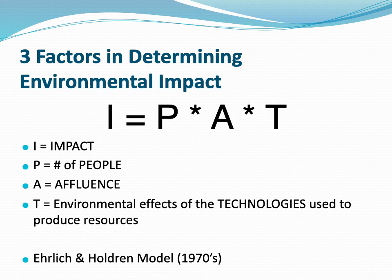When we look at environmental impact, there are really three things: the impact equals the number of people, the affluence (the amount of money and resources available), and the environmental impacts of the technologies used to provide those resources. This model has been around for about 50 years. You don't need to plug numbers in and calculate, but you need to recognize those three things are used to calculate environmental impact.